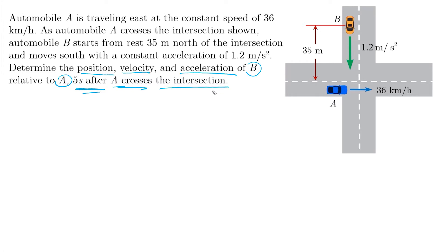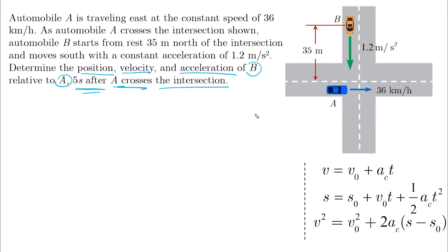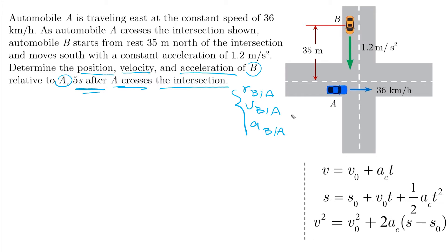We will be using constant acceleration equations because all values here are constant. The problem is asking for position RB relative to A, velocity VB relative to A, and acceleration AB relative to A after 5 seconds. We need all variables for A, all variables for B, and then we just subtract them from each other.